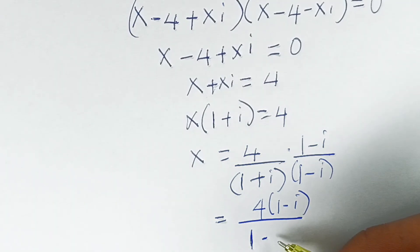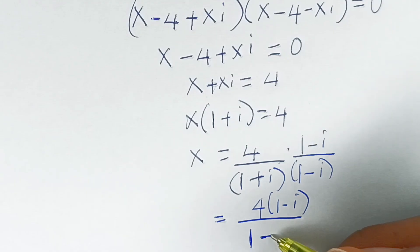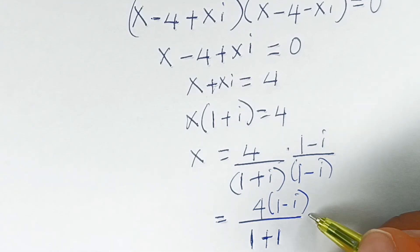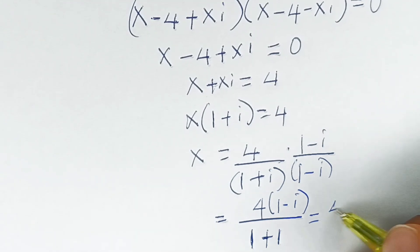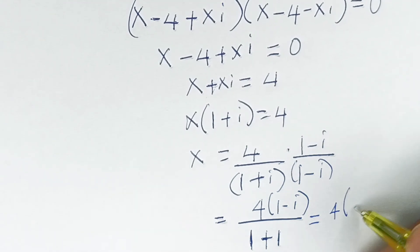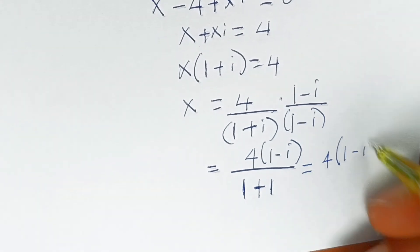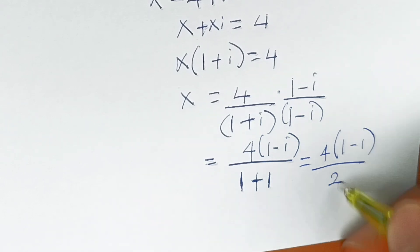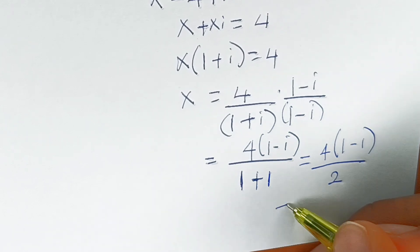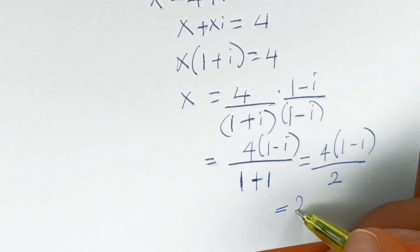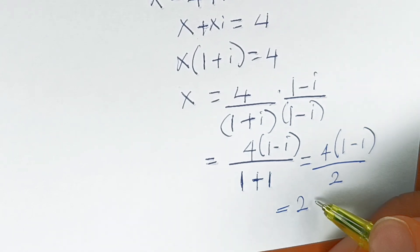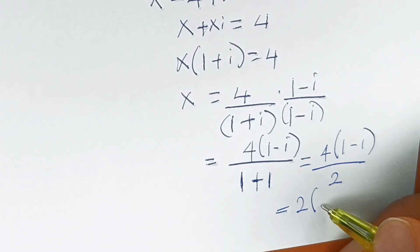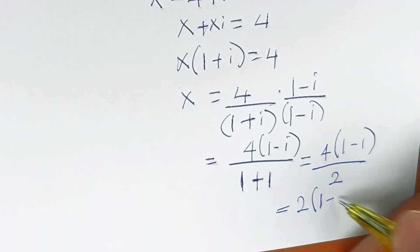...using the difference of two squares in the denominator: 1 squared minus i squared equals 1 minus (negative 1) equals 2. So x equals 4(1 minus i) divided by 2, which equals 2(1 minus i).